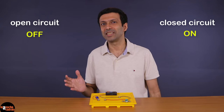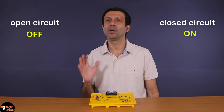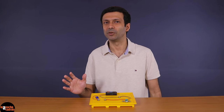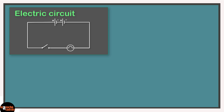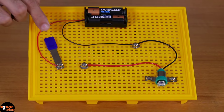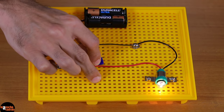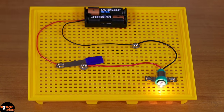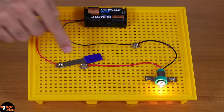There are many other circuit symbols, but we'll look at those in a different video. An electric circuit is represented in a simple way using these circuit symbols. When the switch is on, the circuit is closed and electric current is flowing in the wires.